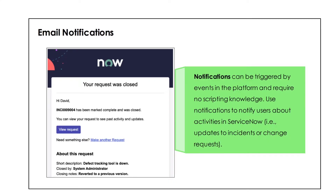To give you an idea: just as a friend request is an event that triggers a phone notification, inside ServiceNow we can configure it so that when a P1 incident happens, the assignment group receives an automatic email saying the P1 incident has been assigned to their queue. The user also gets updates like 'your request was closed.' Some email notifications already exist out of the box in ServiceNow.